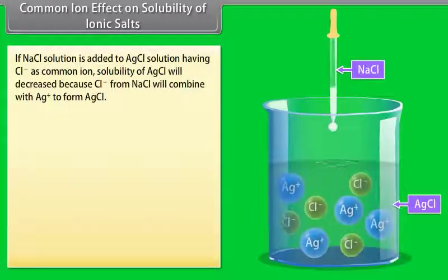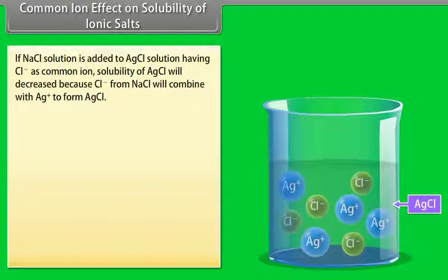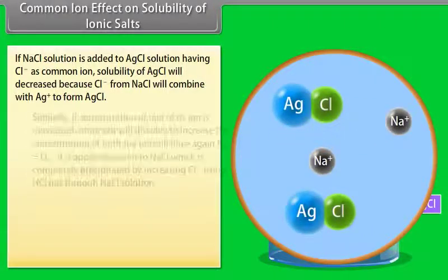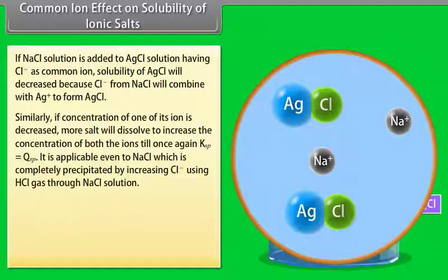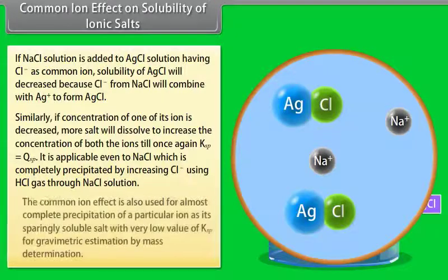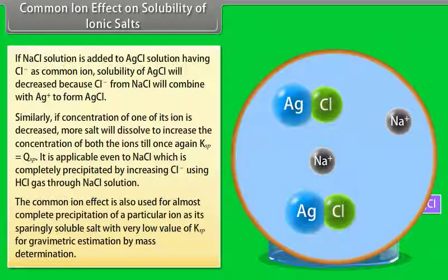If NaCl solution is added to AgCl solution, Cl⁻ acts as the common ion; the solubility of AgCl decreases because Cl⁻ from NaCl combines with Ag⁺ to form AgCl. If the concentration of one ion is decreased, more salt will dissolve until Ksp = Qsp again. The common ion effect is also used for almost complete precipitation of a particular ion as its sparingly soluble salt with very low Ksp value, for gravimetric estimation by mass determination.